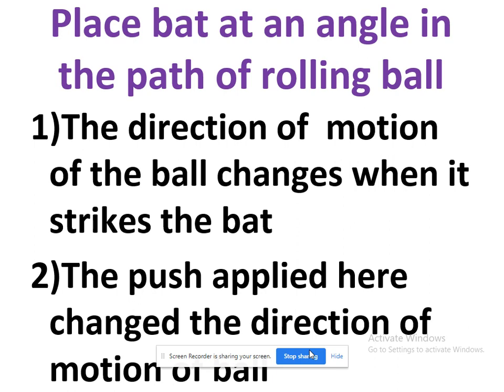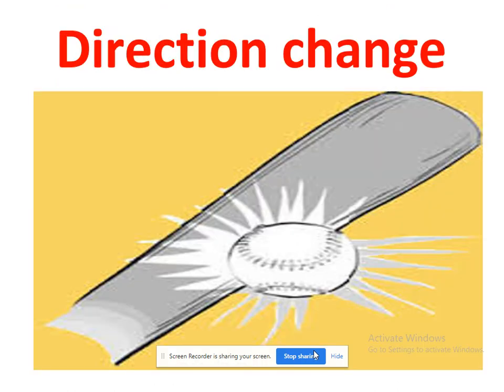When a batsman changes the angle of the bat, he sets the direction of motion of the ball. So the three effects by which you can change a body's state are: first, changing from rest to motion or motion to rest; second, changing the direction of motion; and third, changing the speed of the body — all by the application of force.